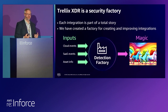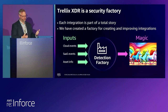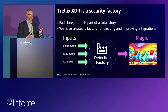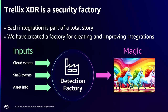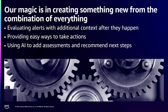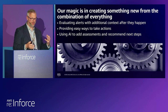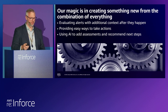All this comes together in what I call a security factory. You take cloud events, you put them in, you take SaaS events, you take the asset info for those, you put them all together in a factory and out comes magic. What do the rainbows and unicorns here actually mean? We are able to put all these together to get the context of what happens, and we'll dive into exactly what this looks like — so it's not just magic fluff, you're going to see what we use.